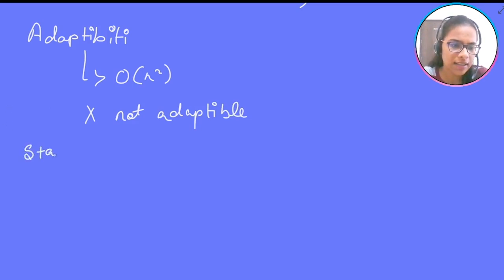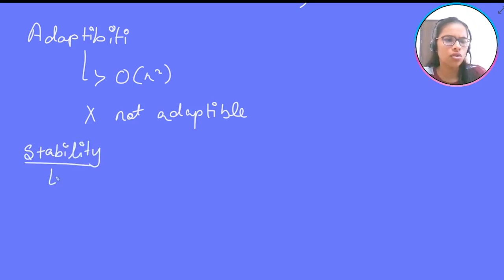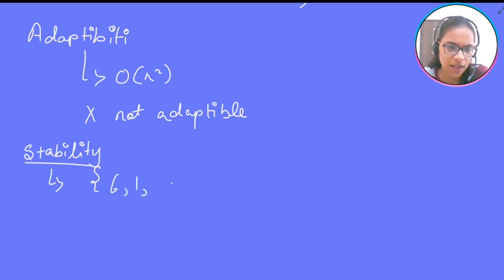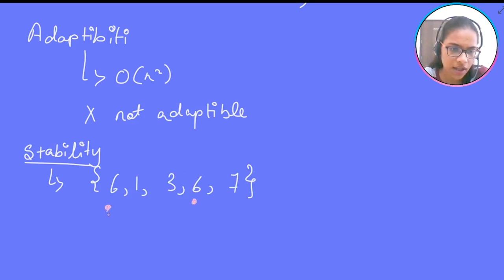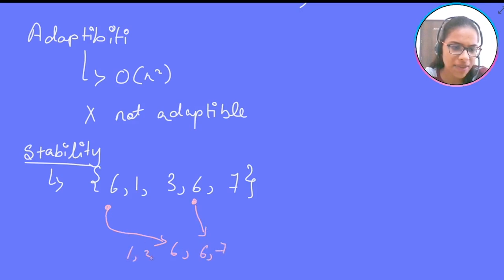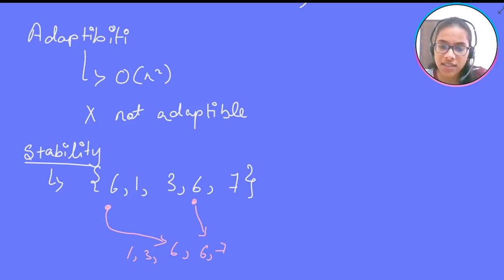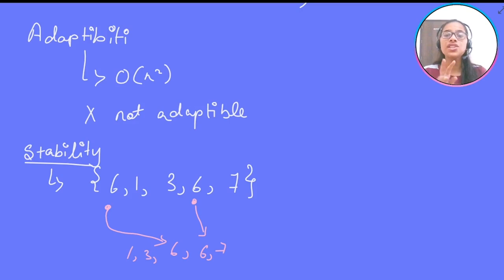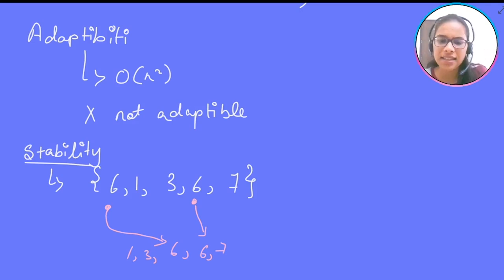Now let's talk about stability. What does stable mean? Suppose we have the array 6, 1, 3, 6, 7 — we have two 6s. In the sorted result, the first 6 should come before the second 6, and that is known as the stability of an algorithm. If the positions of these two 6s are swapped, then the algorithm is not stable. Bubble sort is stable because we only swap elements when one is less than the other, preserving relative order.